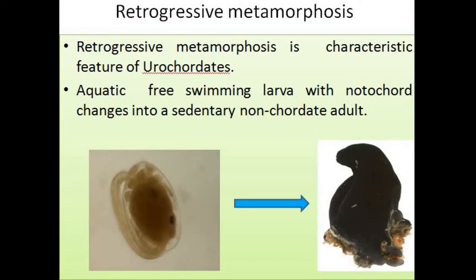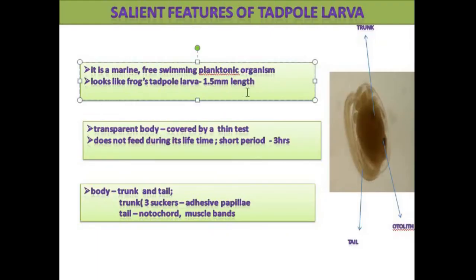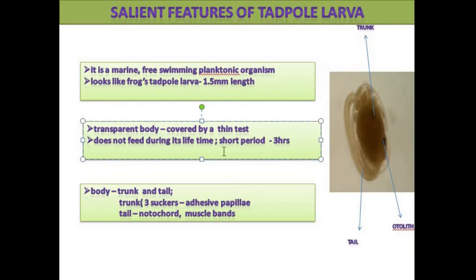What are the salient features of the tadpole larva? It is marine and planktonic in nature. It looks like the frog tadpole larva. It is about 1 mm in length. It has a transparent body. The body is covered by a thin test. It does not feed during its larval lifetime. The larval lifetime is a short period of about 3 hours, though some species have a larval duration of up to 24 hours. The body consists of the trunk and the tail.